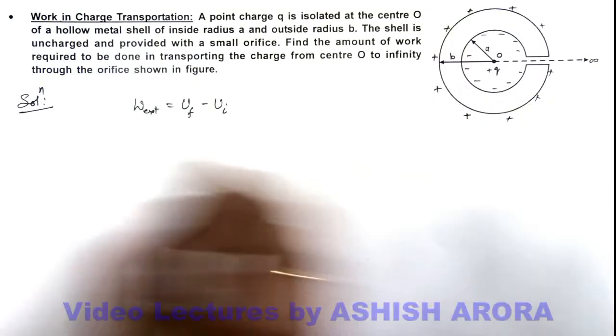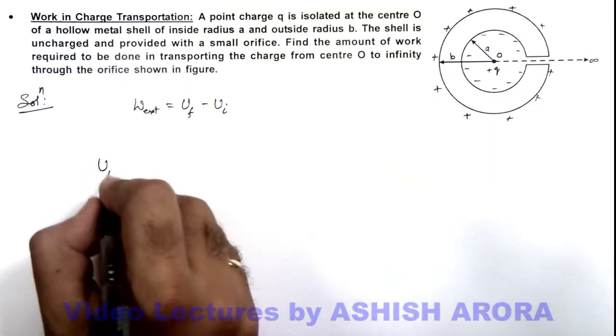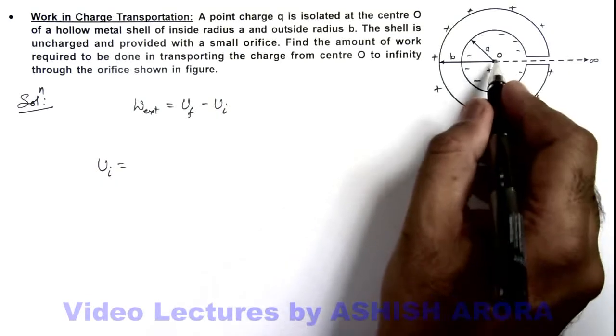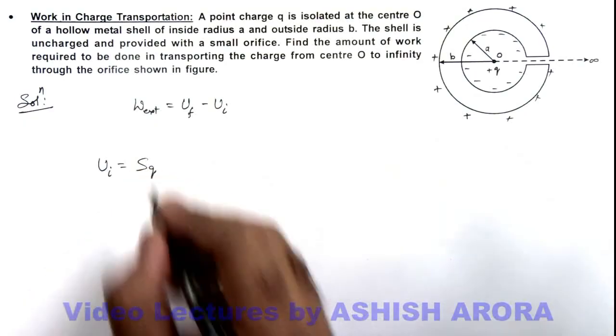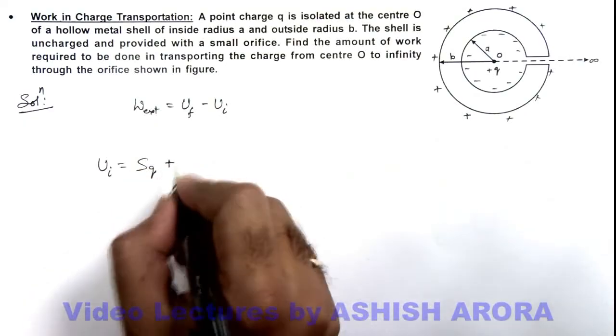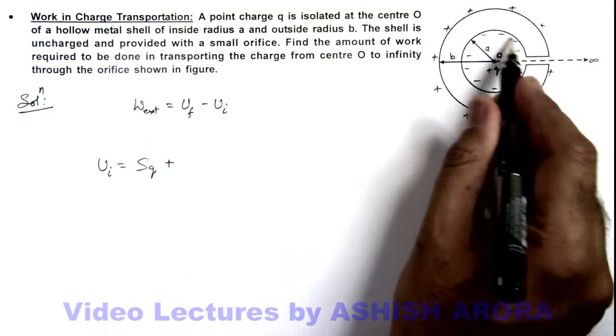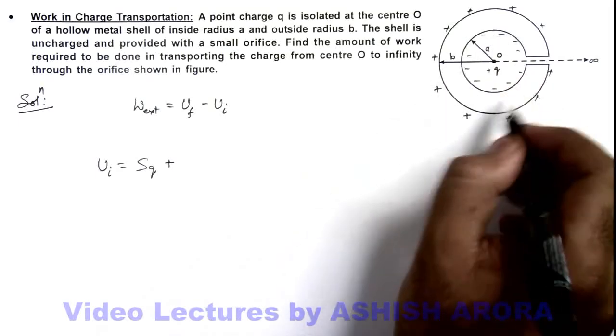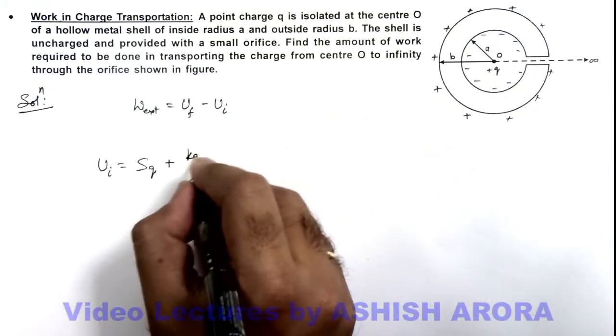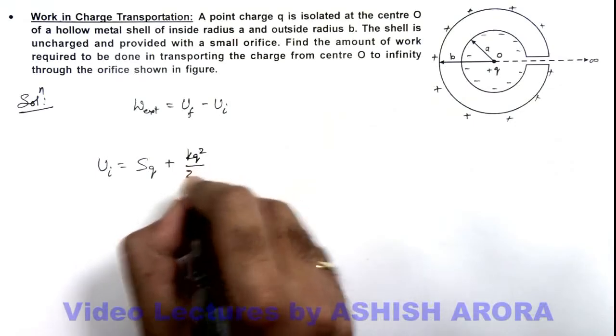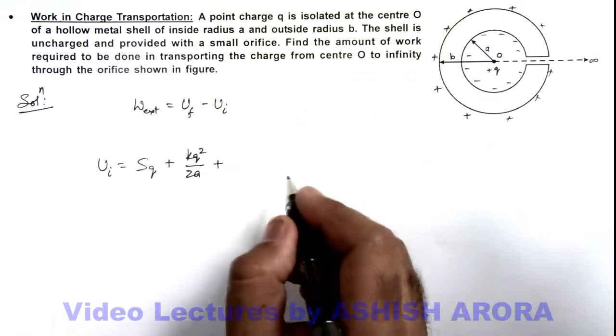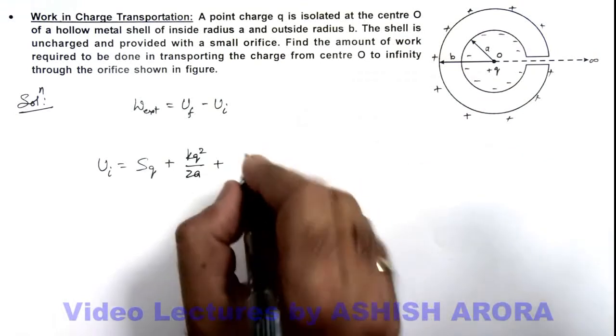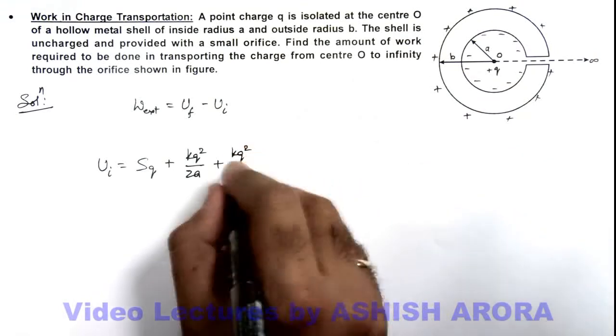So if we find out the initial energy of the system, this can be given by the self energy of this charge +q, that is Sq, plus the self energy of the charge induced on the inner shell, that can be written as kq²/2a, and we can also add the self energy of the charge on the outer surface, that will be kq²/2b.